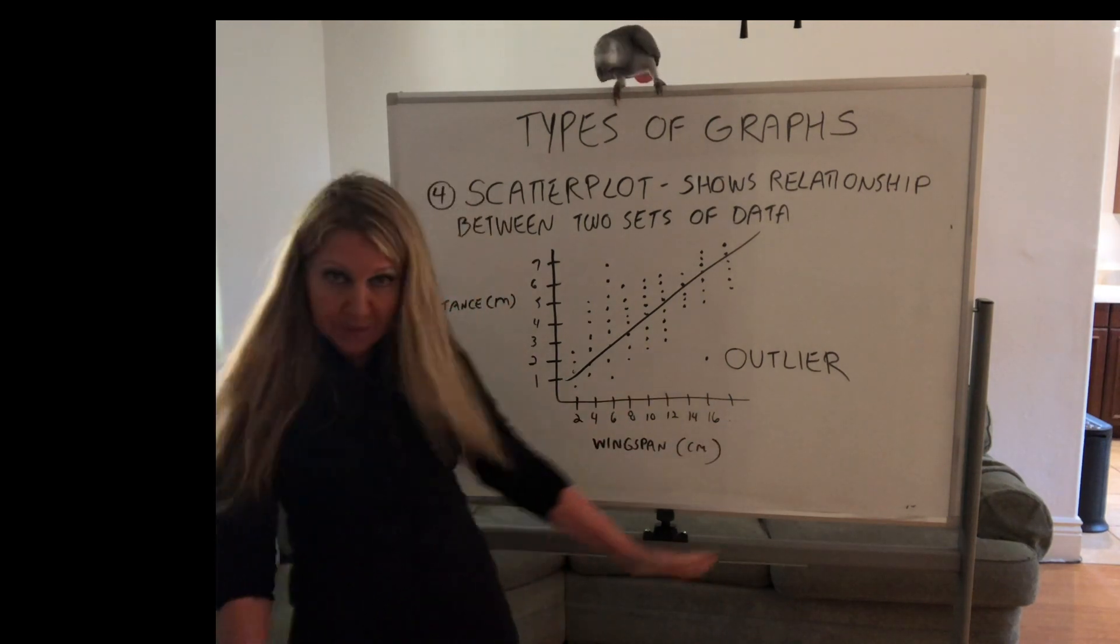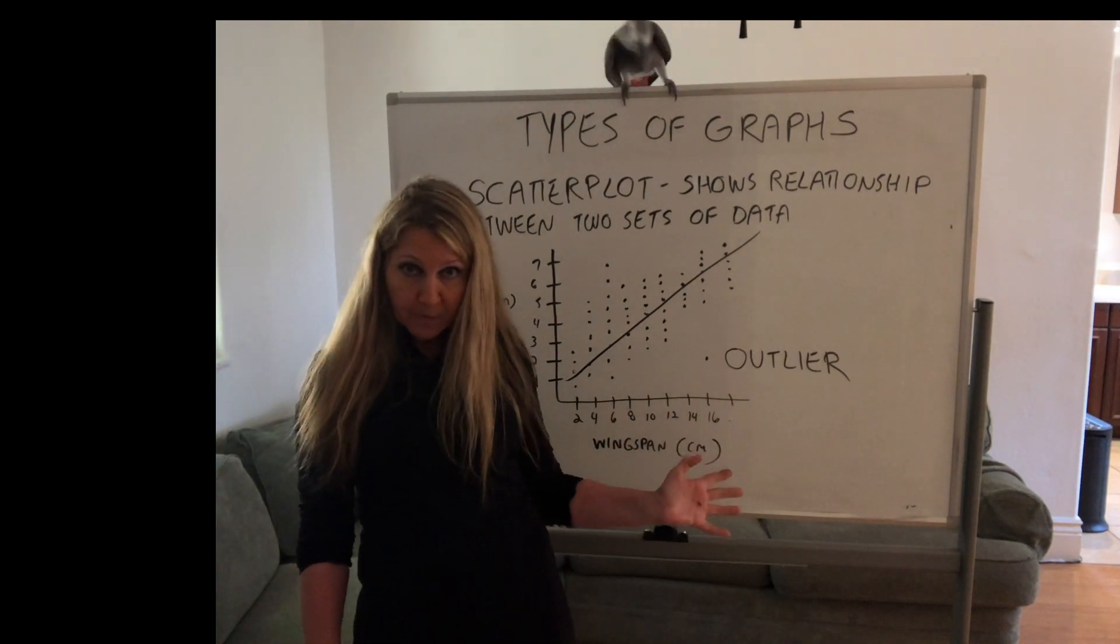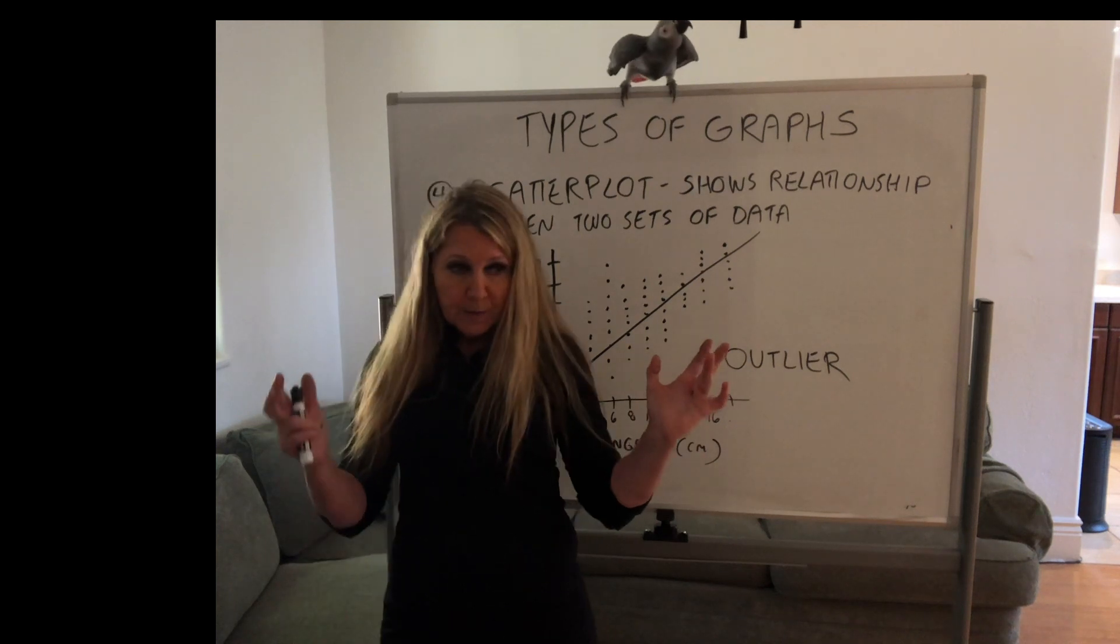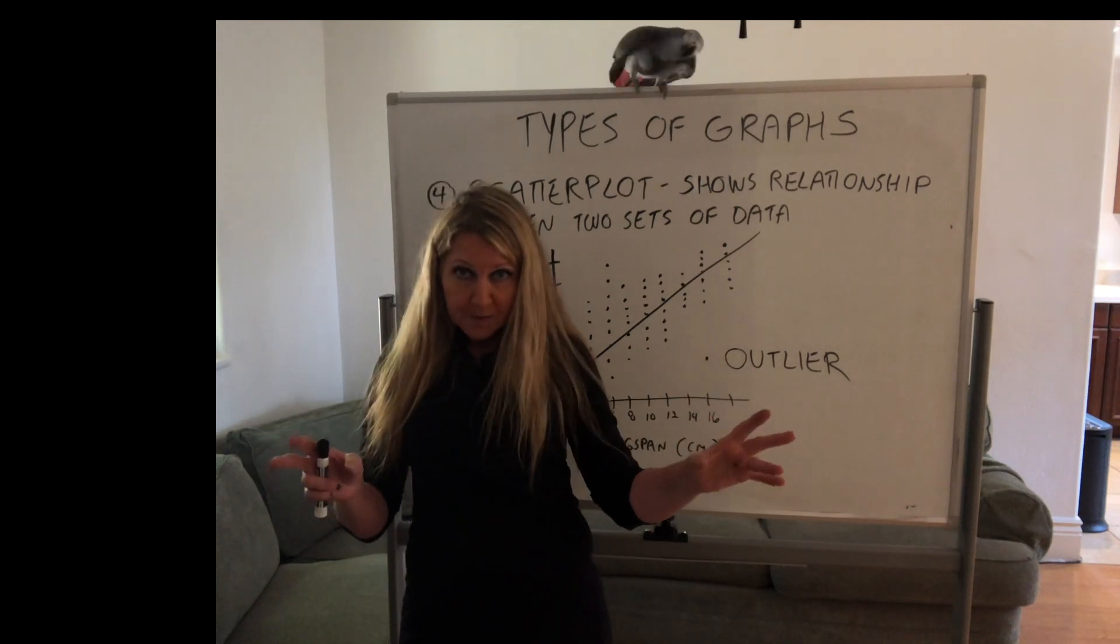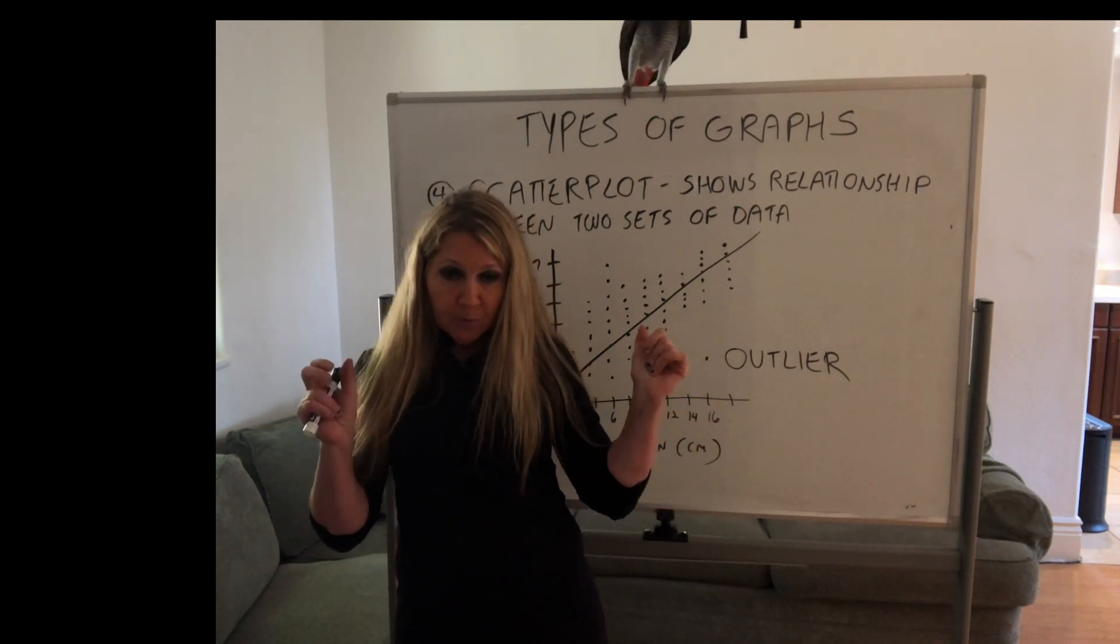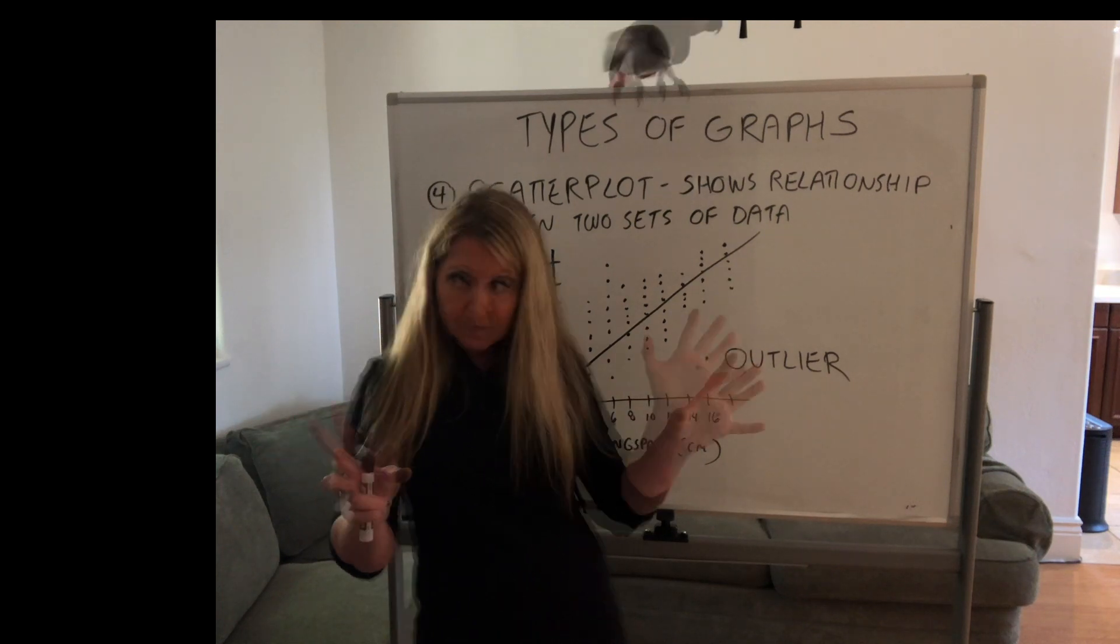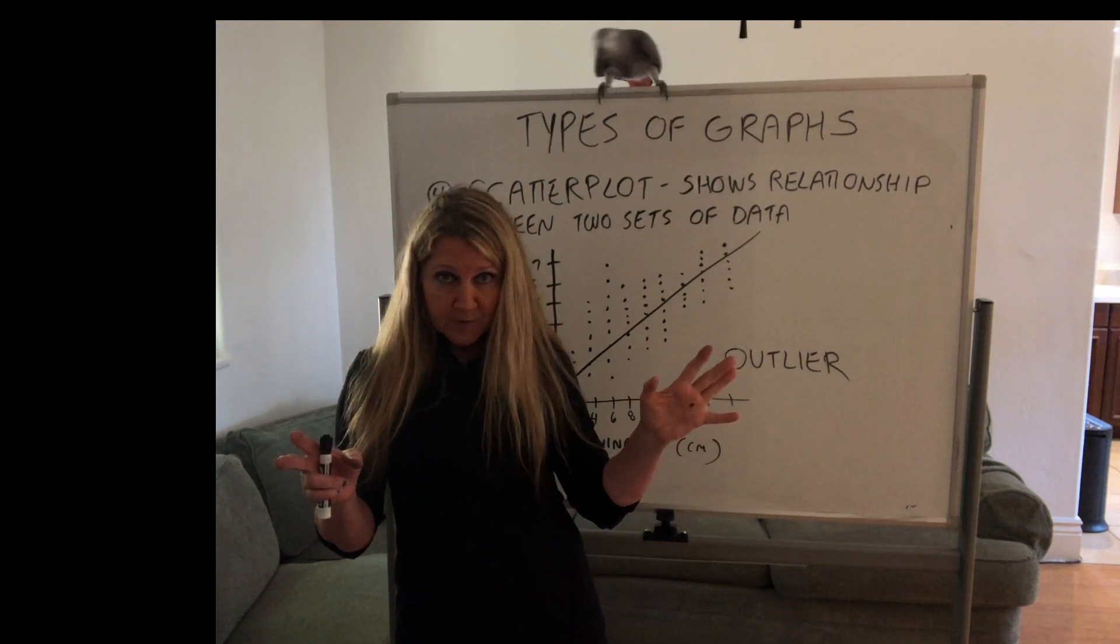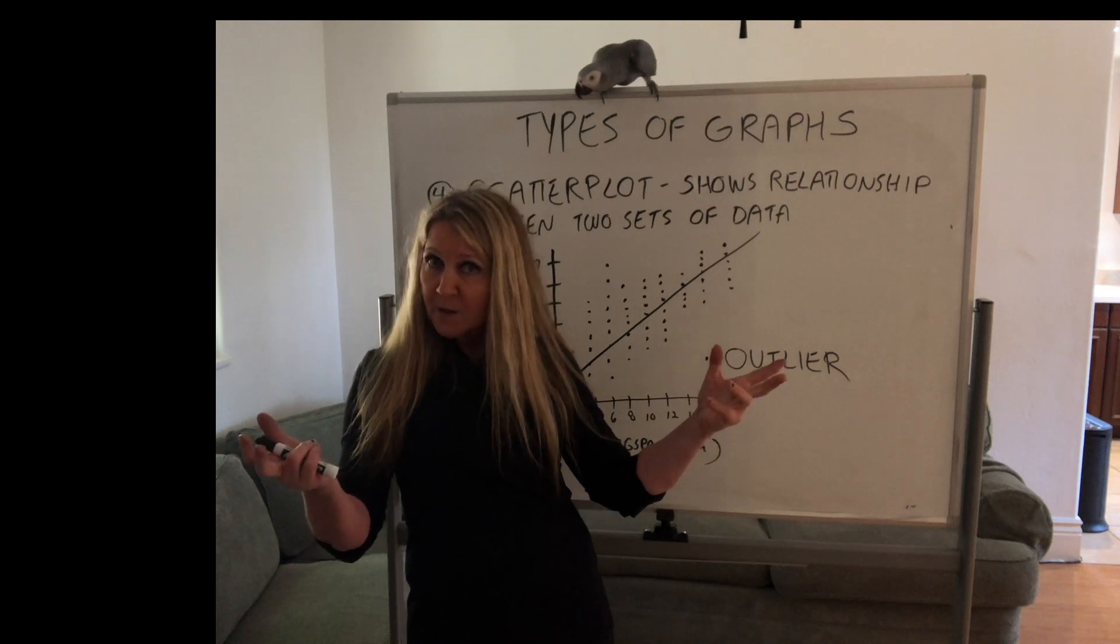The line of best fit is really calculated by determining how far the points are outside of the mean. This is an example of a scatter plot. And we will be using these a lot in science class. And we're going to learn how to graph using Google Sheets, similar to Excel. If you're familiar with Excel, it's actually an easier version using Google Sheets.